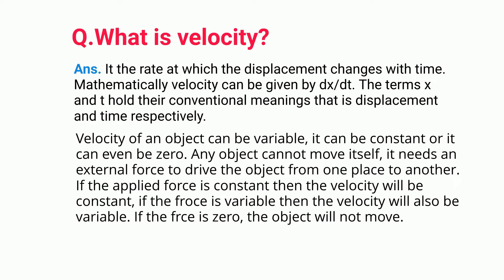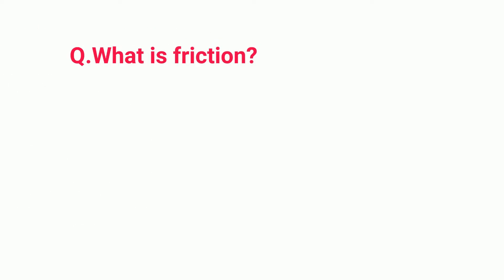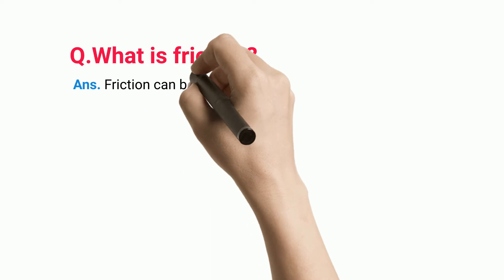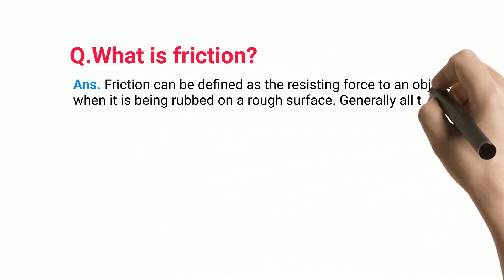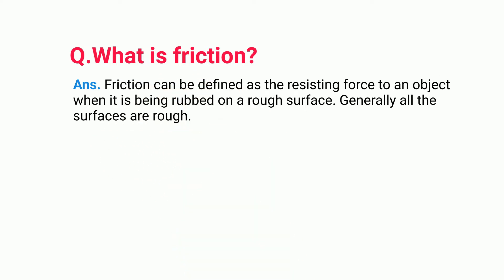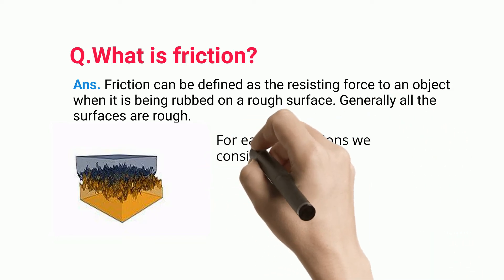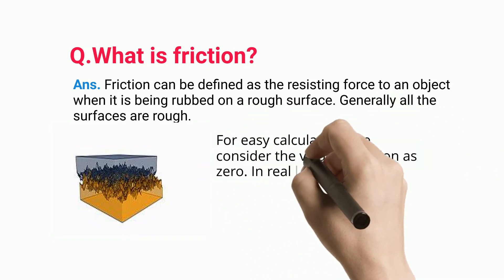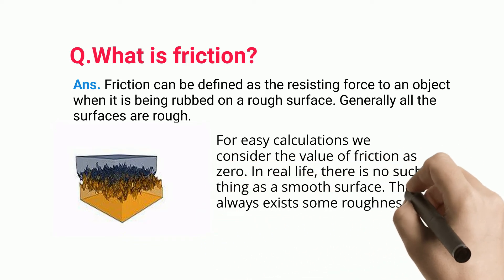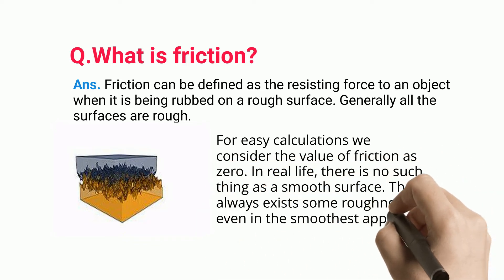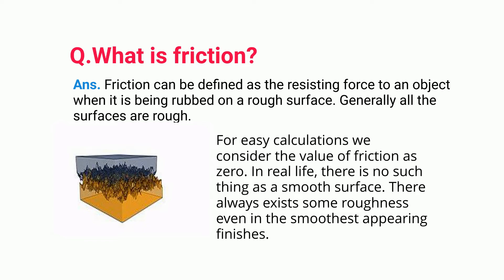What is friction? Friction can be defined as the resisting force to an object when it is being rubbed on a rough surface. Generally, all surfaces are rough. For easy calculations, we consider the value of friction as zero, but in real life there is no such thing as a smooth surface. There always exists some roughness, even in the smoothest appearing finishes.